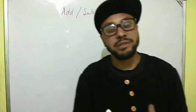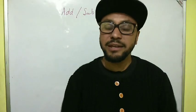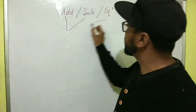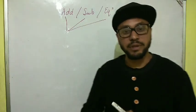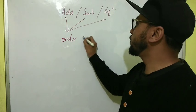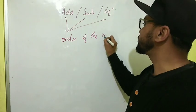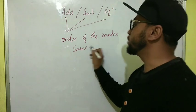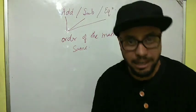As we discussed in the first video, the order of the matrix is very important. When you do any calculation with matrices — to add, to subtract, and to equate two matrices in an equation — the order of both matrices has to be the same. If it is not the same, then we cannot do any calculation.